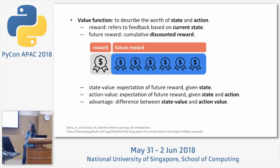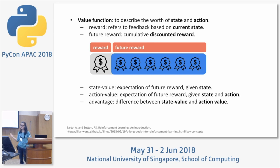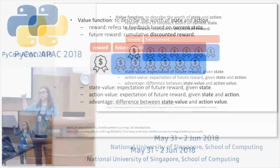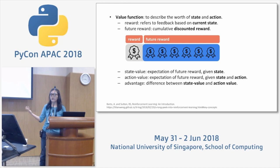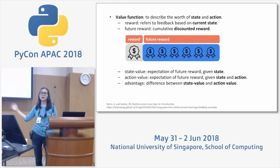There are also state value, action value, and advantage. State value is the expected future reward given a particular state. Action value is the expectation of future reward given a state and action. Advantage is the difference between action value and state value. A higher action value implies the decision given that action is better than the average state value.